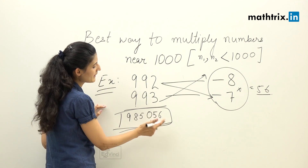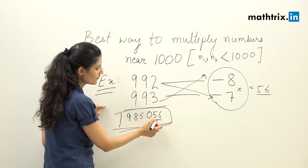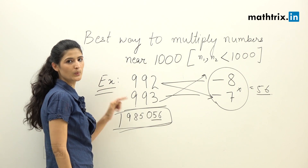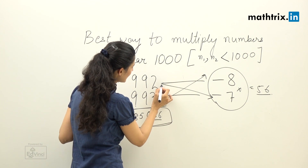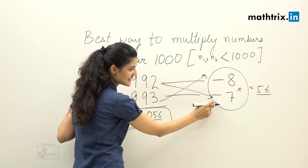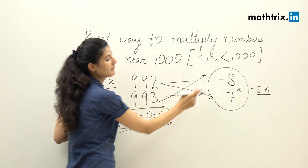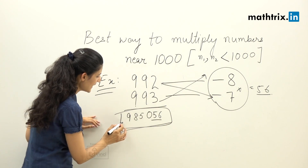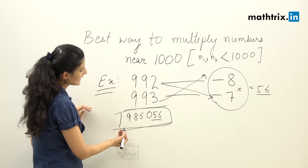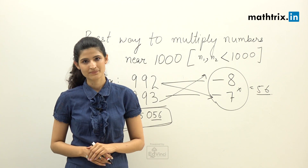Step three: cross addition — add 992 to minus seven or 993 to minus eight, which gives 985. The final answer is 9 lakh 85 thousand and 56.